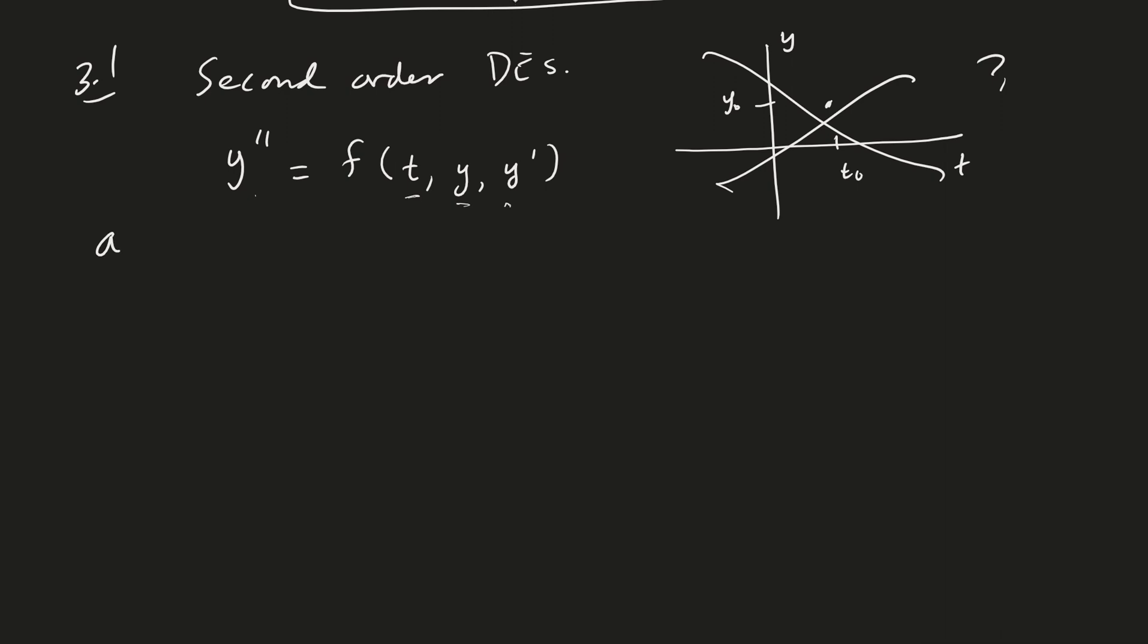We've also seen that we've had different second order differential equations in calculus. For example, when we had acceleration is equal to gravity. This would be equivalent to saying that the second derivative of position is gravity, right? And so that is a second order differential equation. So if we integrate it once, we get a constant there. And then if we integrate it twice, so this is the velocity, we would have one-half gt squared, right? Plus c1t plus c2. So this would be your position function.